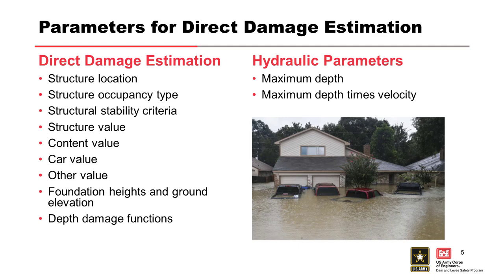Starting with direct damage estimation — your structure gets flooded, your vehicle gets flooded, contents within your structure or vehicle may be lost during a flood event. When considering these damages, the structure attributes in our structure inventory really matter: where the structure is located, where your vehicle is when the flood comes, and the construction type, which informs occupancy type and stability criteria.